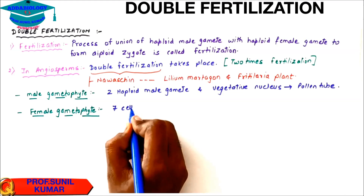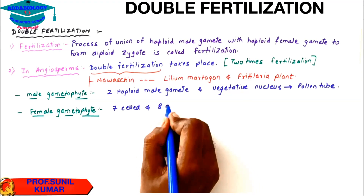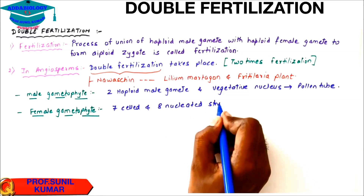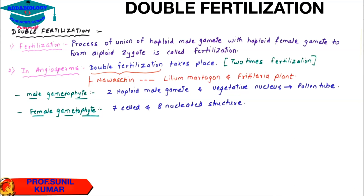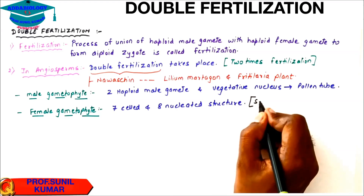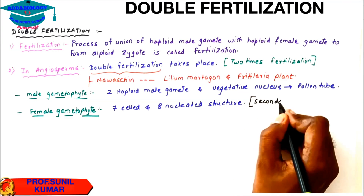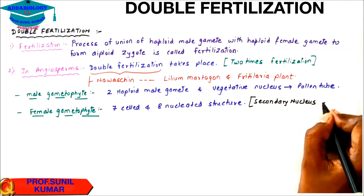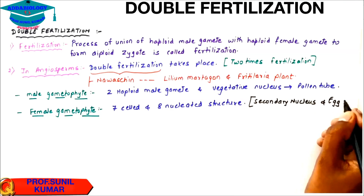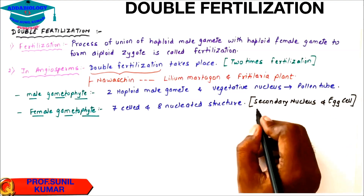The female gametophyte is a 7-celled and 8-nucleated structure. The most important parts that will take part in fertilization are the secondary nucleus and the egg cell.